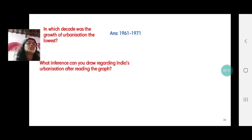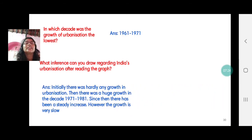What inference can you draw regarding India's urbanization after reading the graph. Now this is a question where we analyze the graph. We have already seen that initially there was hardly any growth in urban population, which was hardly growth of 0.2 percent and the population increased from 18 to just 18.2 percent. Then there was a huge growth between the decade 1971 to 81. Since then there has been a steady increase.